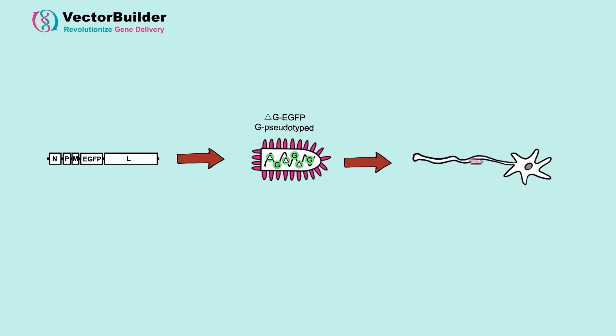Now when we make our recombinant virus, we can package it into an infectious viral particle that has the glycoprotein. It can infect a neuron, turn it nice and green, but any virus that gets produced using the recombinant genome cannot spread.